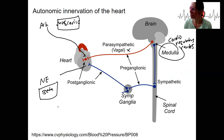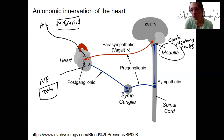This is our receptor. It's typically the case with the autonomic nervous systems that they act in opposition to each other.